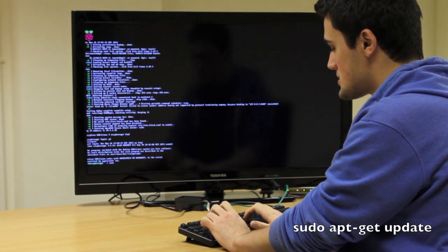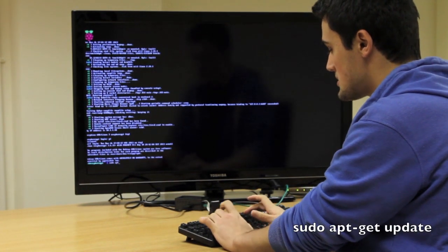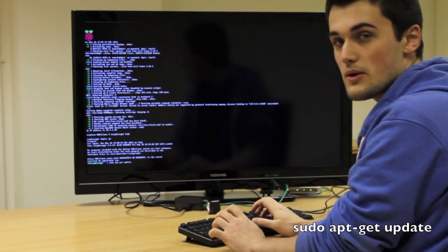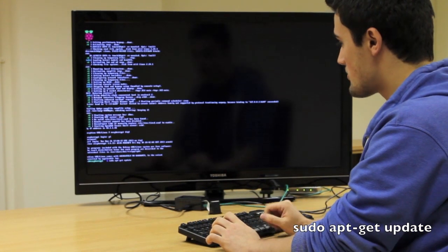Once we're logged in, we need to do sudo apt-get update, and that will update the package lists we've got on the Raspberry Pi.